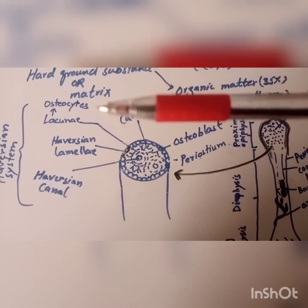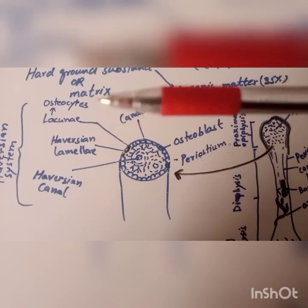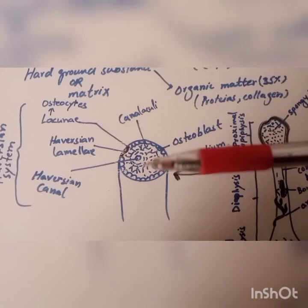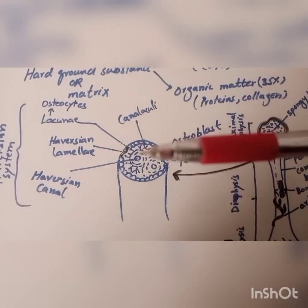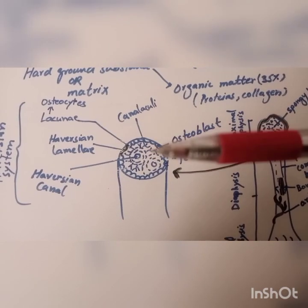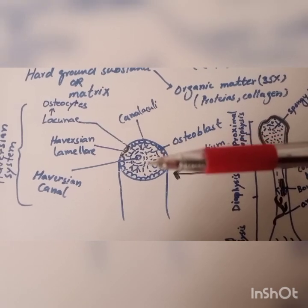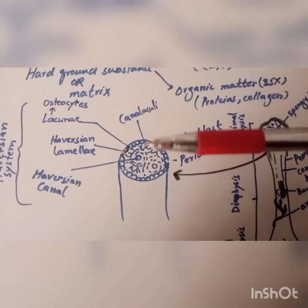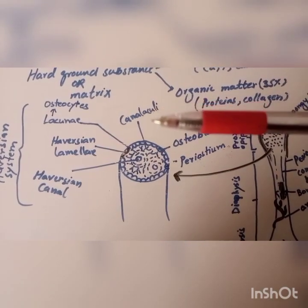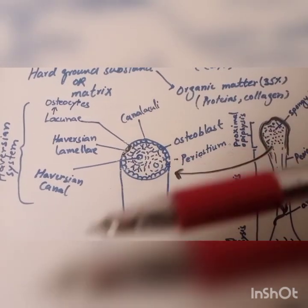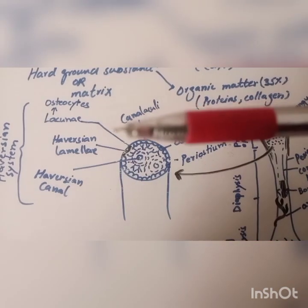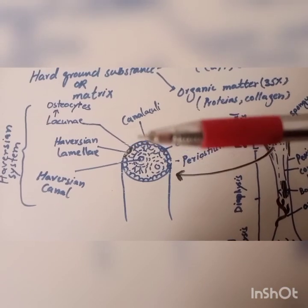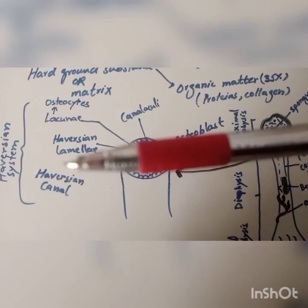These osteocytes are the primary bone cells. From the lacuna, radiating fine fibers in all directions are known as canaliculi. So the Haversian canal, along with the Haversian lamellae, lacuna, and canaliculi, makes the Haversian system.